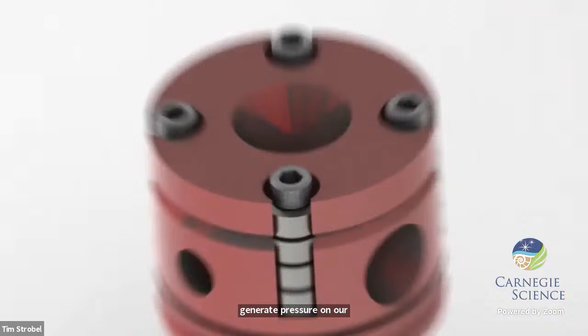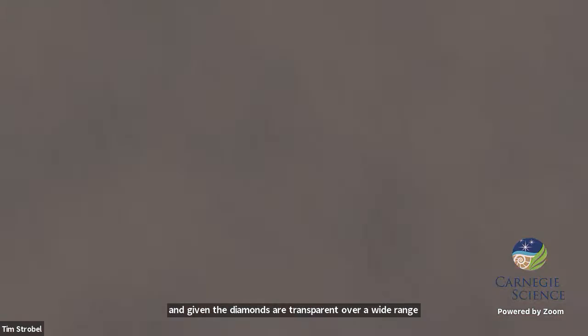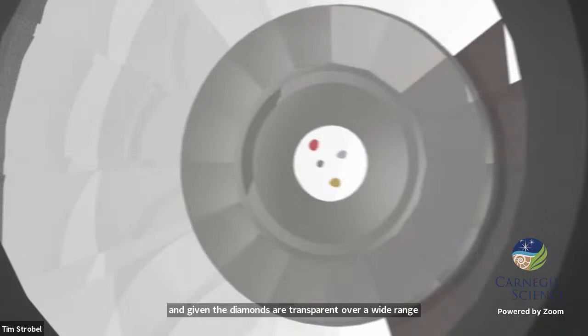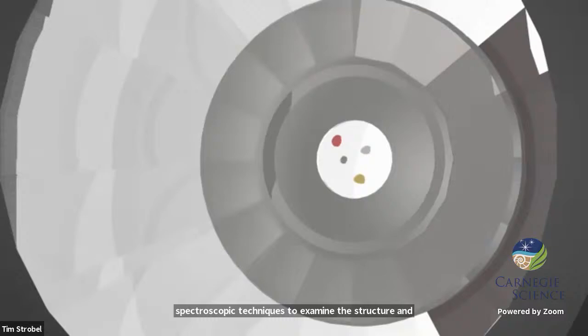Given that diamonds are transparent over a wide range of the electromagnetic spectrum, we can visually examine our samples under compression, use a variety of spectroscopic techniques to examine the structure and properties of the material under compression and in-situ conditions.